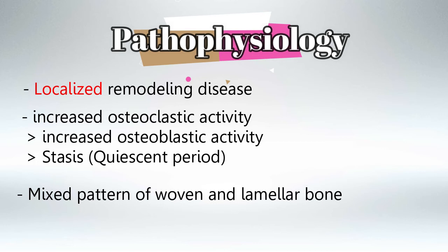Lamellar bone is the normal bone that we are born with, and woven bone is the abnormal bone that has been modified. Lamellar bone collagens are arranged in parallel, so they're very strong and thick, whereas woven bone collagens are arranged in a chaotic way, so they're very weak and prone to fractures.